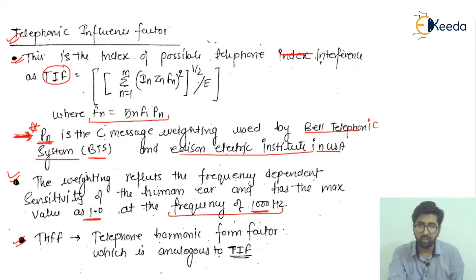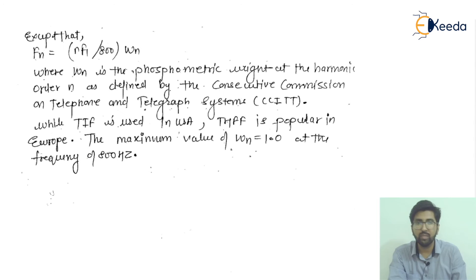THFF is the telephone harmonic form factor, which is analogous to TIF. However, Fn equals F1/800 multiplied by ωn, the natural frequency of oscillations. ωn is the phosphometric weight at the harmonic order n, as defined by the Consultative Commission on Telephone and Telegraph Systems (CCITT).